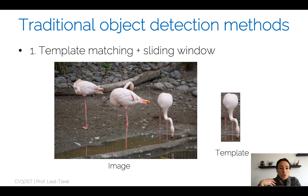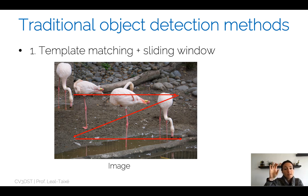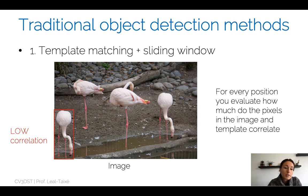How we would use this template is with a sliding window approach. We would start by putting this template on the top-left corner of the image and slide it all the way through, placing it on top of different parts of the image. At every position where we place the template, we would compute the correlation between the template and the image — essentially evaluating how much the pixels in the image and the template correlate.